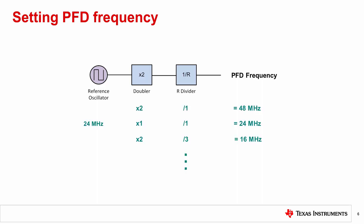To begin with, enable the doubler and set the R divider to 1 in order to maximize PFD frequency. If there are blocking spurs in the frequency band, reduce the PFD frequency step by step until the jitter requirements are met. For this example, the 48 MHz PFD should be fine assuming that VCO frequency is 5 GHz. The integer boundary spur is 8 MHz away from the carrier and should not cause any trouble.